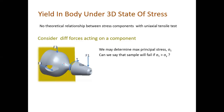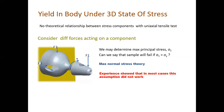One option was to remove the maximum principal stress and say that if the maximum principal stress in the direction of the stress reaches a limit, the material will fail. This is called the maximum normal stress theory, and it was also used. But experience showed that in most cases this assumption did not work, and in the majority of cases this theory is insufficient.